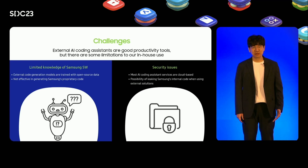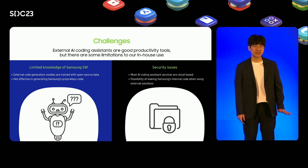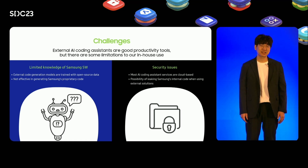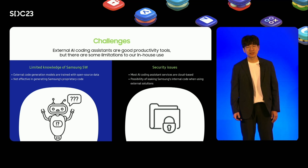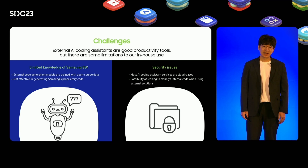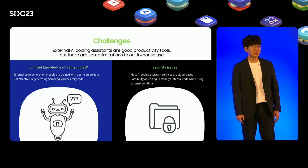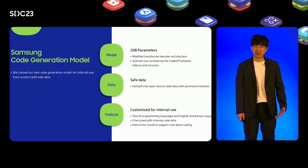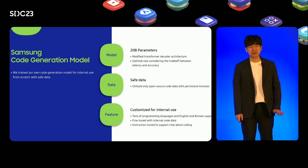While AI coding assistant tools hold immense promise, using external tools within a company has limitations. One challenge is their compatibility with proprietary software due to limited knowledge of undisclosed components. Additionally, using external tools raises concerns about exposing sensitive internal code. To address these limitations, we embarked on building an internal tool powered by our own code generation model.